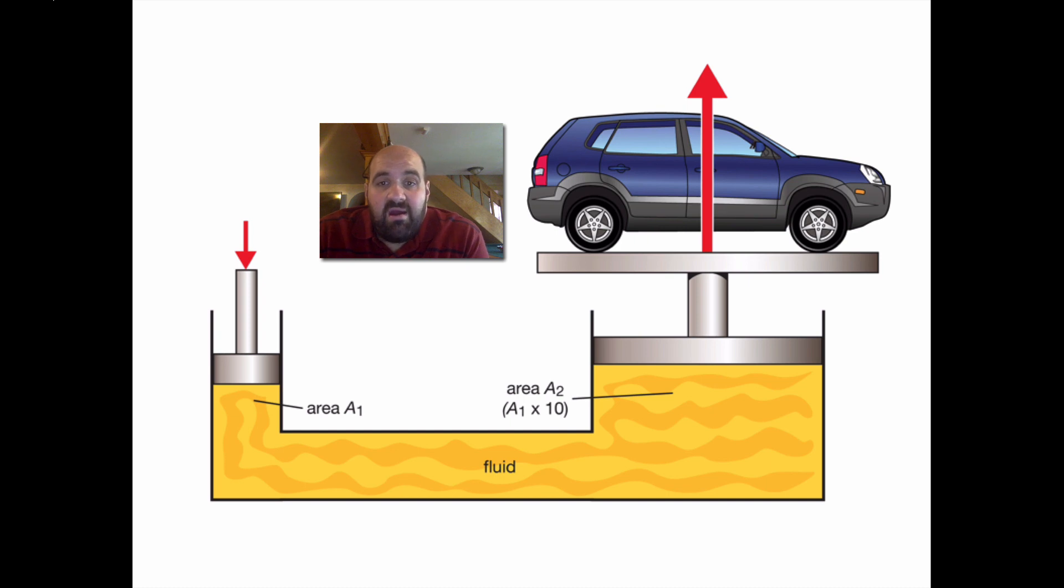Now, normally, if you've got a 2,000-pound car, you'd have to push down with a force of 2,000 to lift it up. But that's not going to happen here. Basically, you have a smaller area here for this piston than you do over here. And they actually tell us that this area is 10 times the size of area 1.